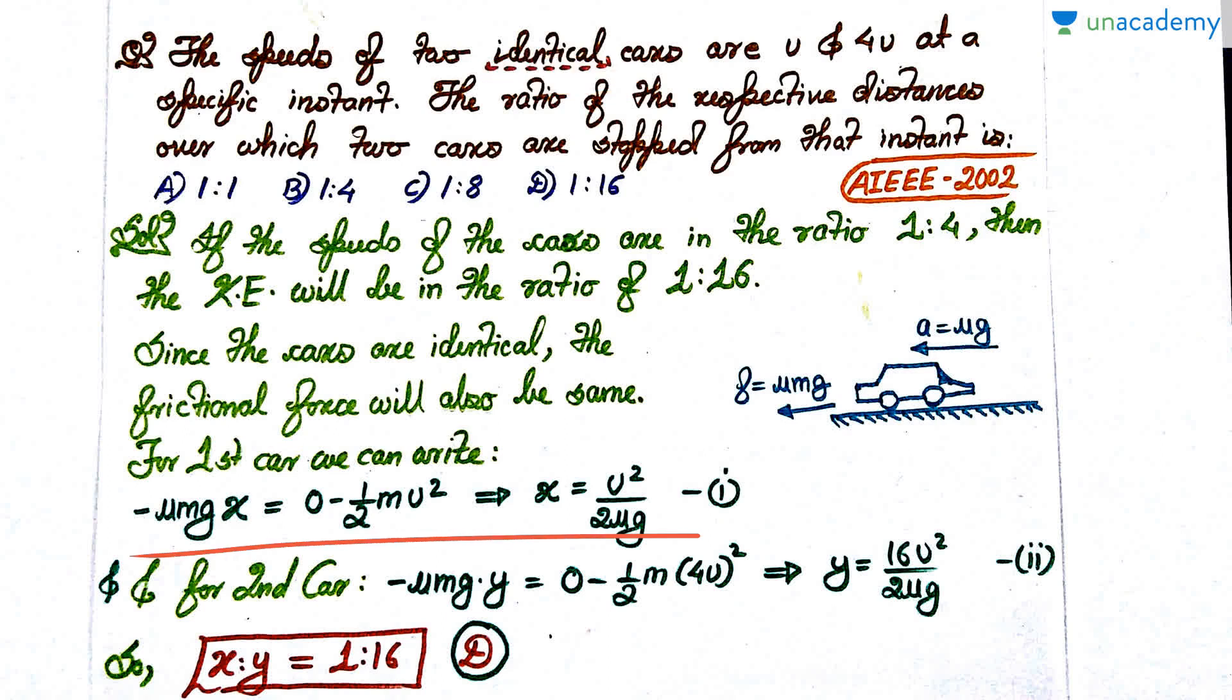You can write down work done. Again applying work energy theorem, work done equals change in kinetic energy. Final kinetic energy will become zero. That's why zero minus initial kinetic energy is half mu². From here I get that it stops after moving distance x, so x becomes u² by 2μg.